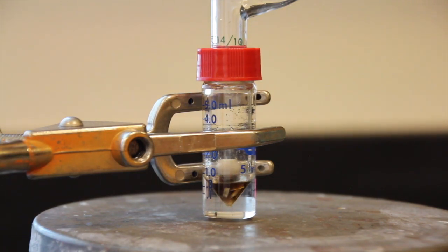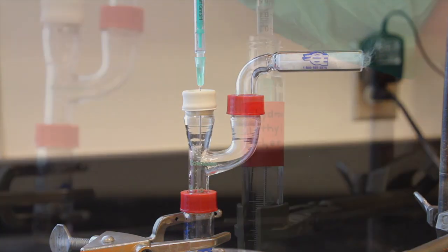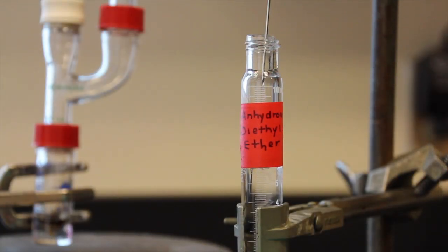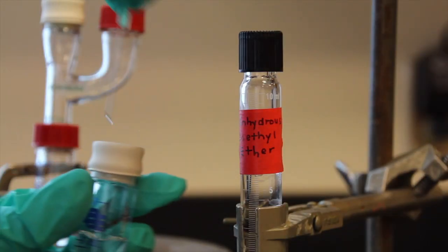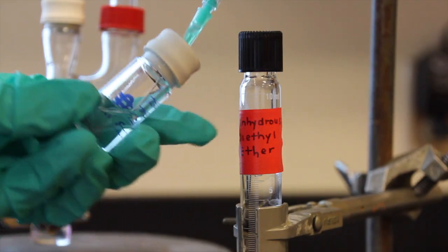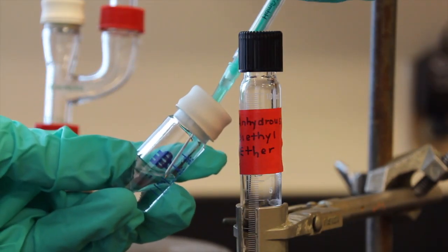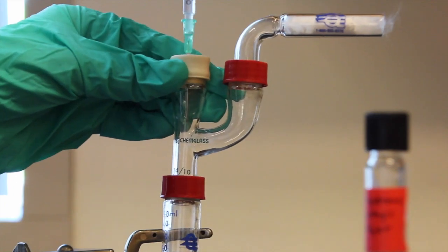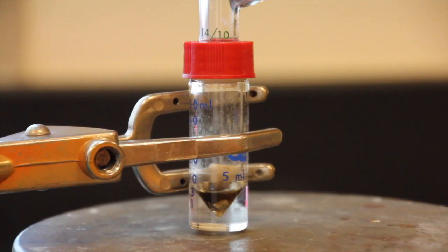Continue stirring and add the remaining solution of bromobenzene slowly over a period of five minutes. When all of the bromobenzene solution has been added, perform a quantitative transfer by adding 0.5 milliliters of anhydrous ether to the vial that originally contained the bromobenzene solution, drawing it into the syringe and adding to the ether reaction mixture. Continue to stir the mixture and allow it to cool to room temperature.